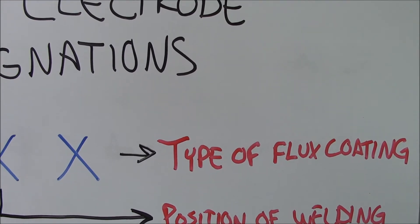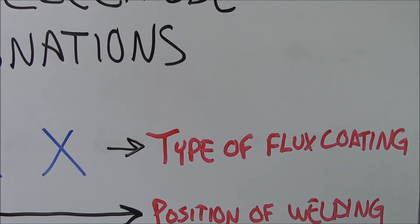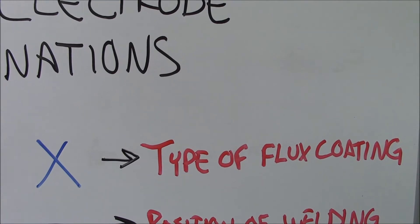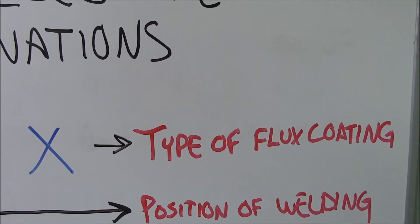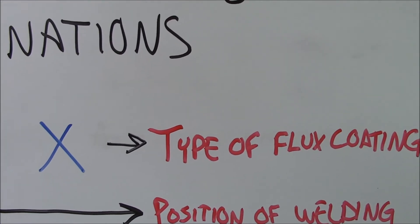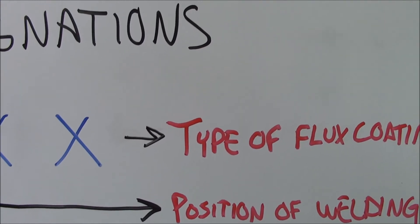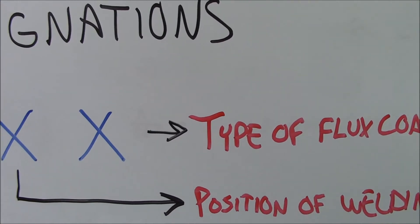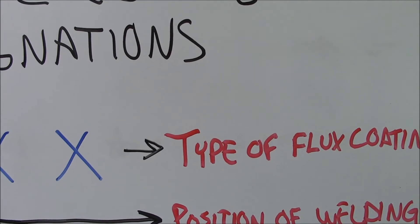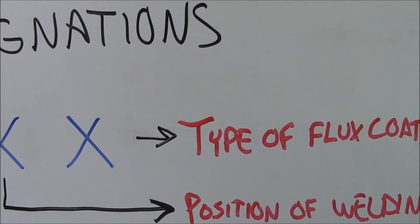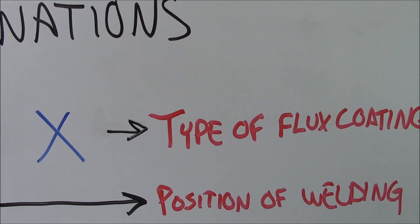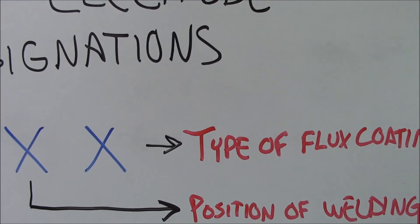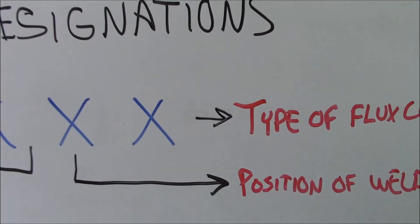Commonly, we've got zero, we've got one, we've got pretty much two through nine, and it will tell you whether it's cellulose or low hydrogen or whether it runs on AC polarity only and certain types of things like that.